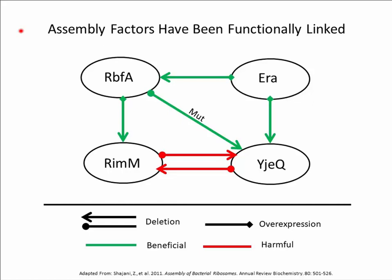Furthermore, understanding the specific functions of these factors may help identify steps of the ribosome biogenesis pathway that will provide targets for new antimicrobials. Four assembly factors considered as possible drug targets are YJQ, ERA, RIM-M, and RBFA. YJQ and ERA are both GTPases, and RBFA and RIM-M have been loosely classified as maturation factors. These four factors have been shown to be functionally linked using genetic, biochemical, and structural approaches — for instance, overexpression of one factor can compensate for deletion of another, and a direct functional relationship has been shown between YJQ and RBFA. Despite growing information, a detailed understanding of their interactions with assembling ribosomal particles remains elusive.